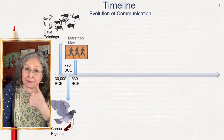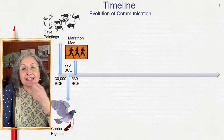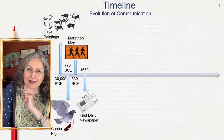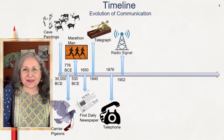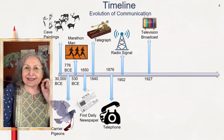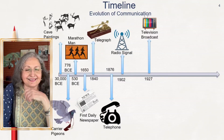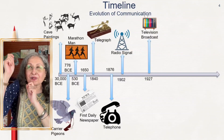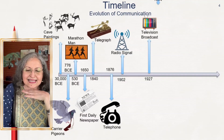Then came the marathon man in Greece — people were running with letters to deliver them from one place to another, and the Olympics also began from Greece. Then we had the daily newspaper — mark the dates. Then the telegraph and the telephone — mark those dates too. Then the radio signal came and we started communicating through radio. Then came the television broadcast; those with some grey hair may remember the black-and-white TV with snow on screen in India, and adjusting the antenna so the picture came through. Television came in 1927; in India it came much later.